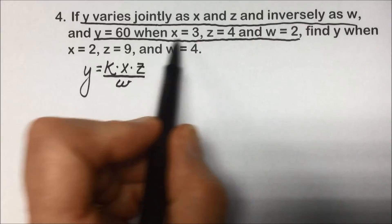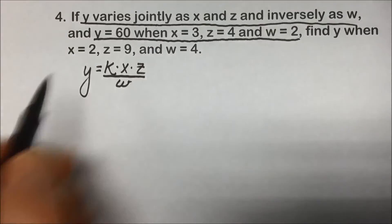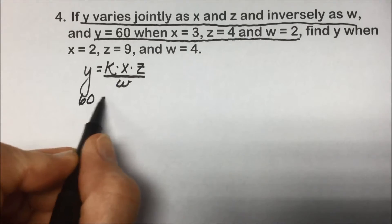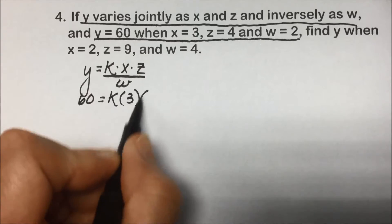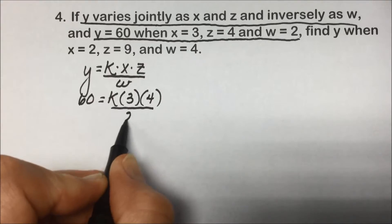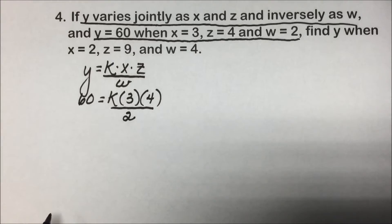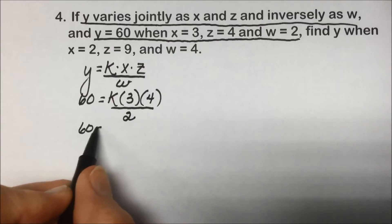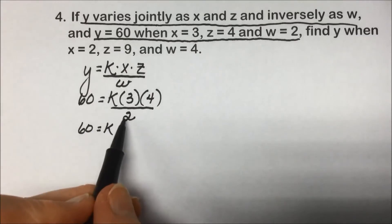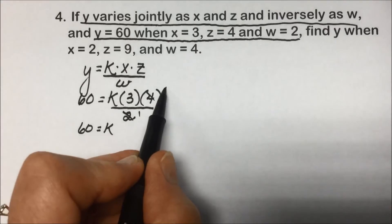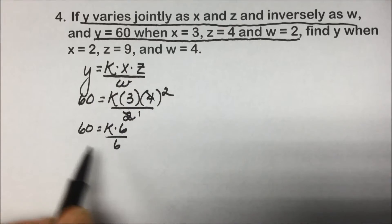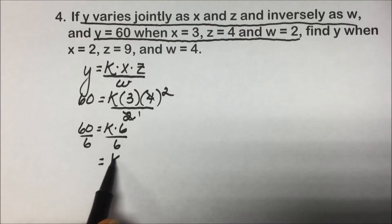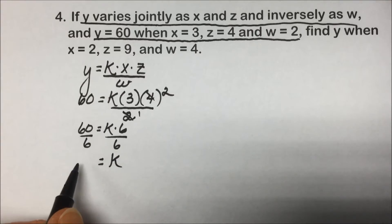Using the complete set of variables, we'll replace Y with 60, K is our unknown, X is 3, Z is 4, W is 2. Simplifying this, we will end up with 2 cancels out a 2 in our 4 and leaves us with a 6. Dividing both sides by 6 leaves us with a constant here, constant of variation equal to 10.